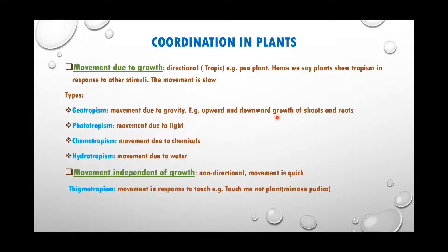These controlled movements of plants are done by chemicals or hormones released by the plant. Plants do not have a nervous system like animals, but they do have hormone secretion. Movement of plants occurs in two ways: due to growth, and independent of growth.